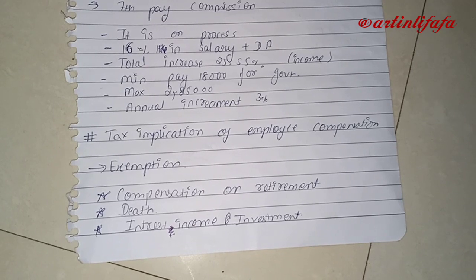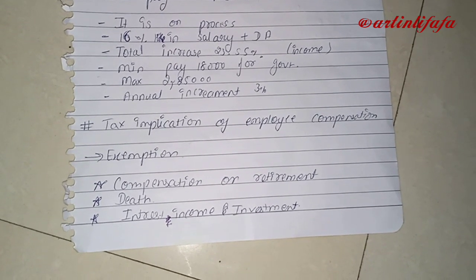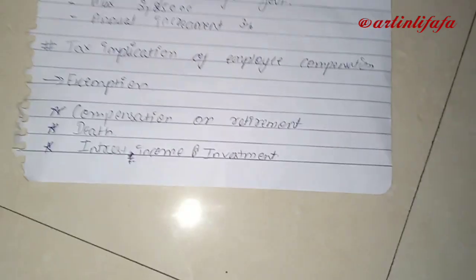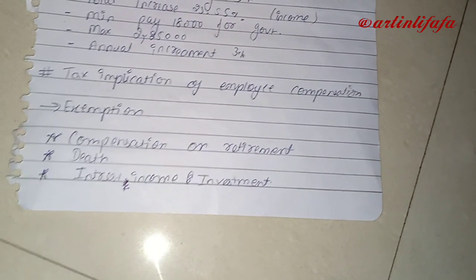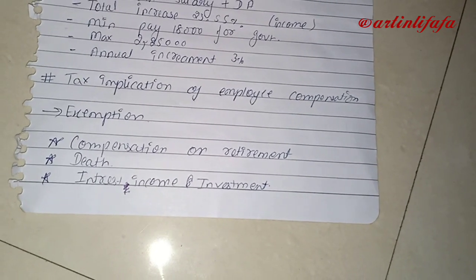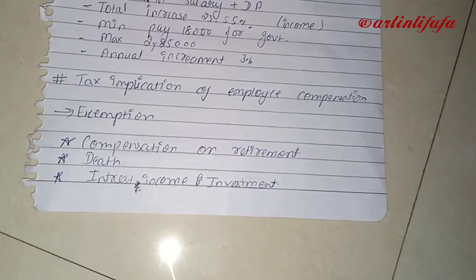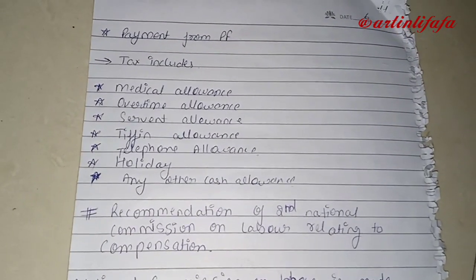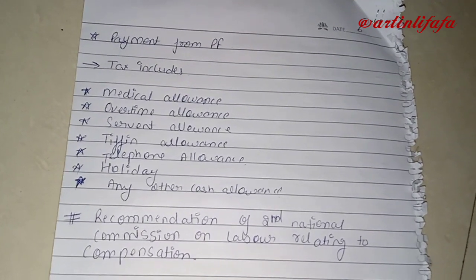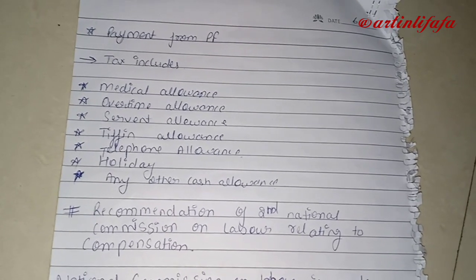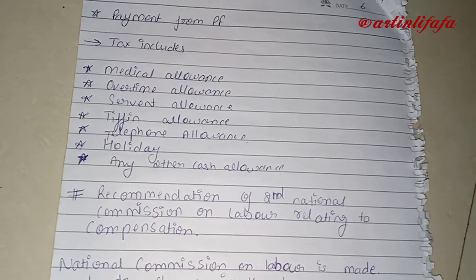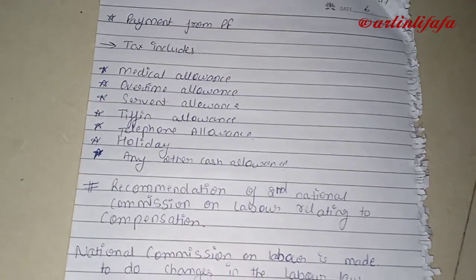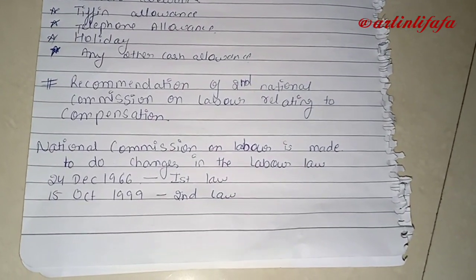The next topic is the tax implications of employee compensation. The taxable components include medical allowance, overtime allowance, servant allowance, telephone allowance, holidays, and any other cash allowances. These payments are subject to tax. The next topic is the recommendations of the Second National Commission on Labor relating to compensation.